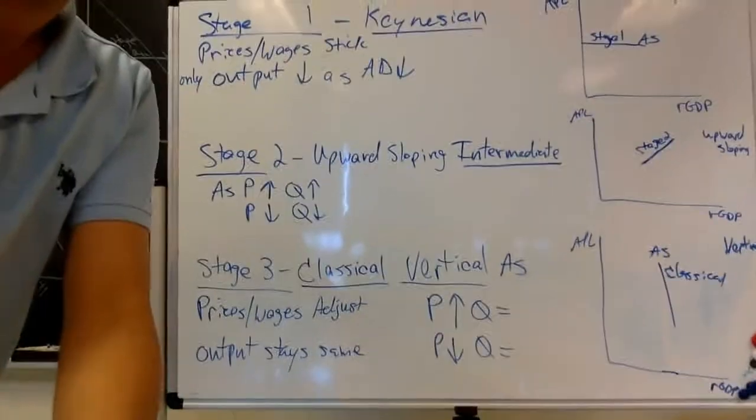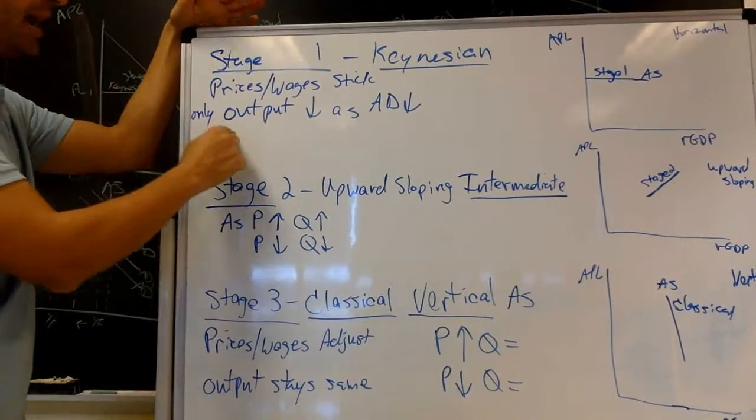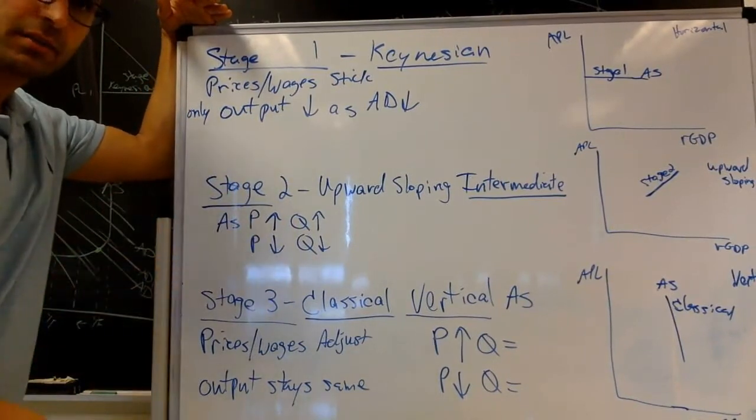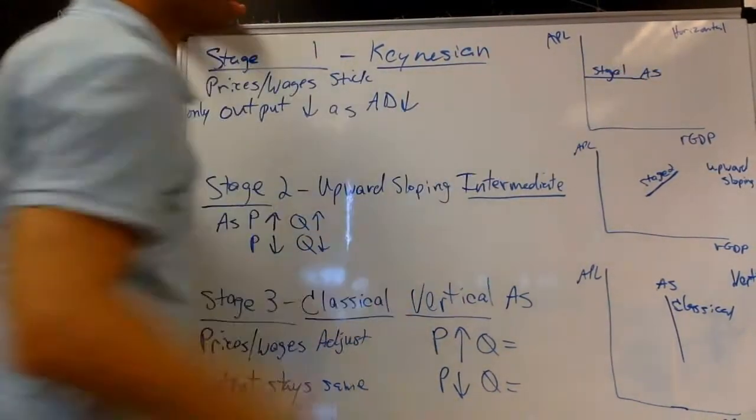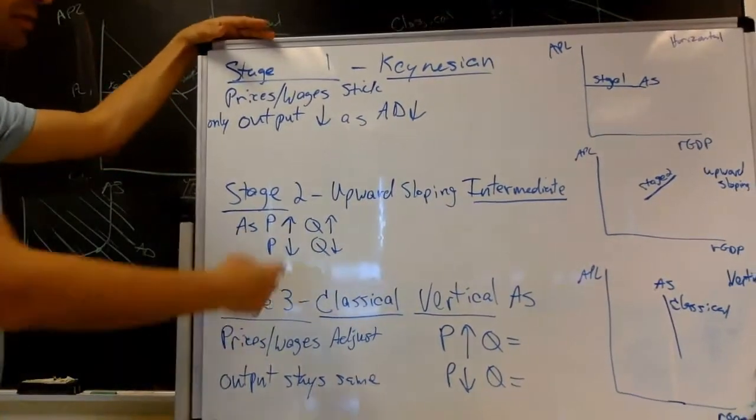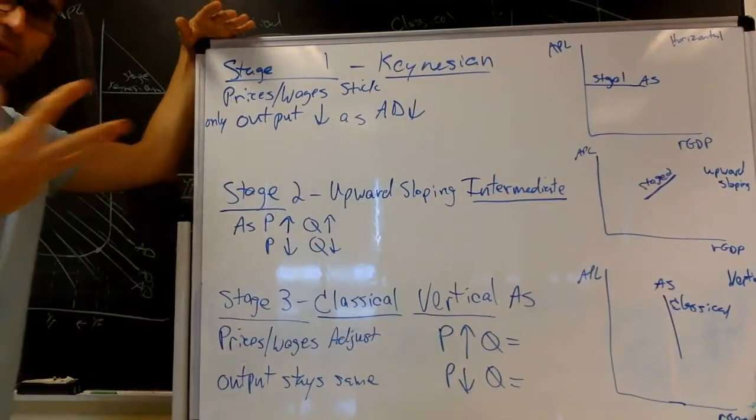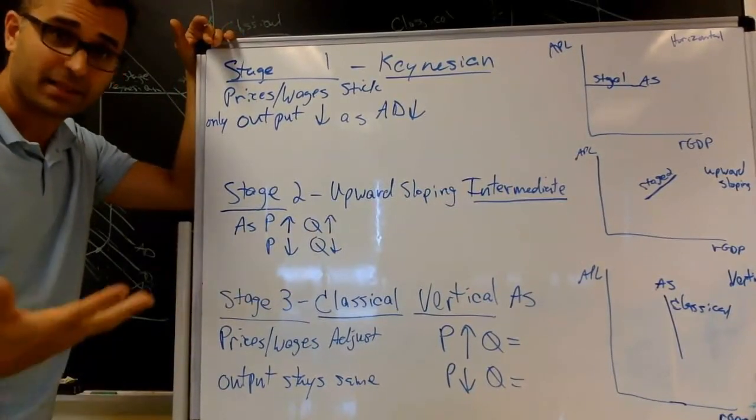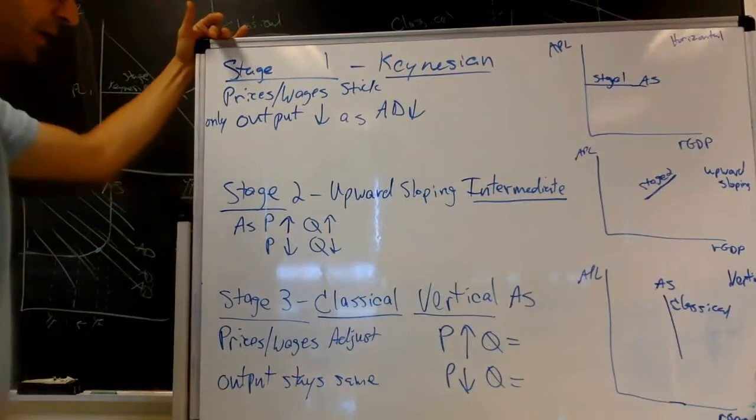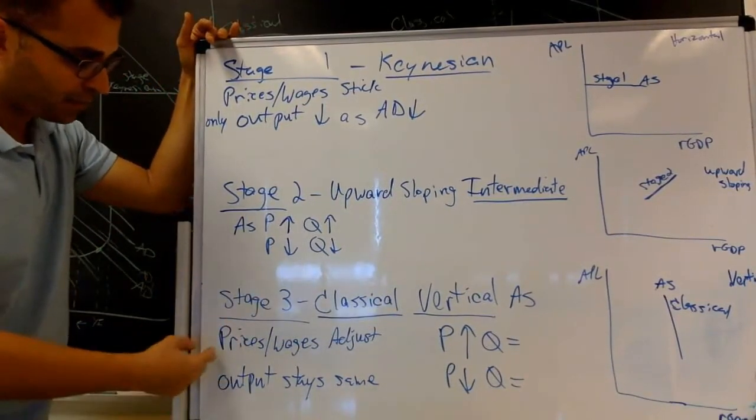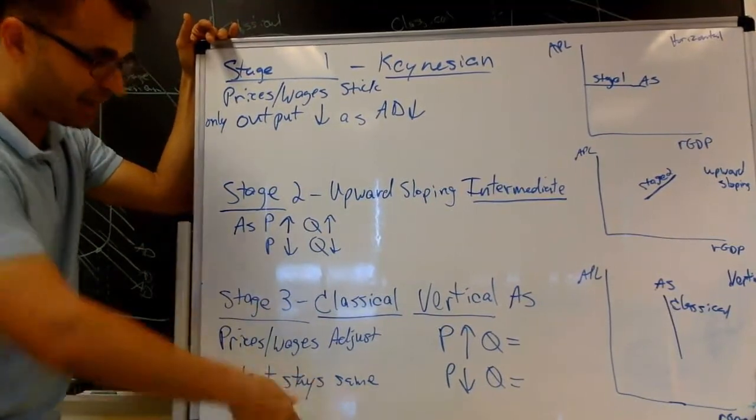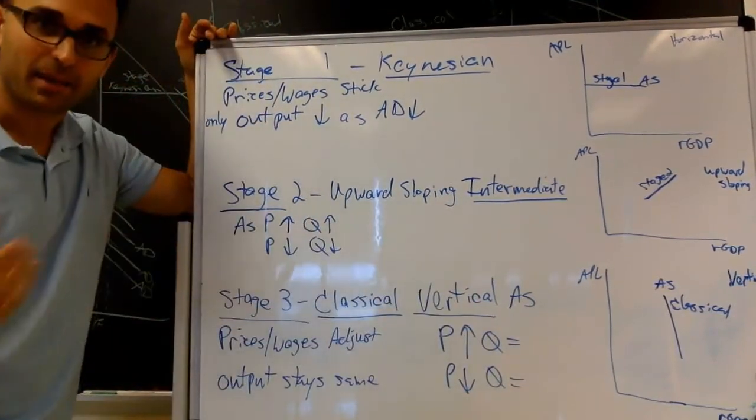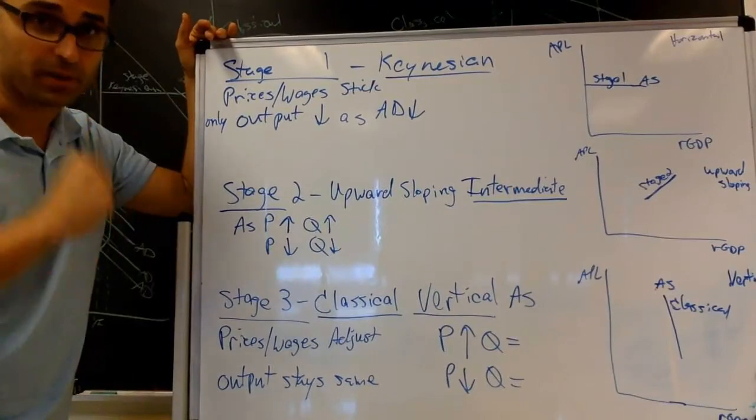Here's a quick summary. Stage one, Keynesian: prices and wages are sticky. Only output goes down as aggregate demand goes down. We typically focus on Keynes in the short run during recessions. His curve is horizontal. Stage two, the upward sloping part, is the intermediate, the part between short run and long run. As price goes up, quantity goes up. As price goes down, quantity goes down. That's the typical upward sloping supply curve. Stage three, classical, is your vertical aggregate supply. Prices and wages adjust quickly, so output stays the same as price changes. So as price goes up, quantity stays the same. As price goes down, quantity stays the same at your long run full employment. Alright, that's the concept. I hope you understand it.